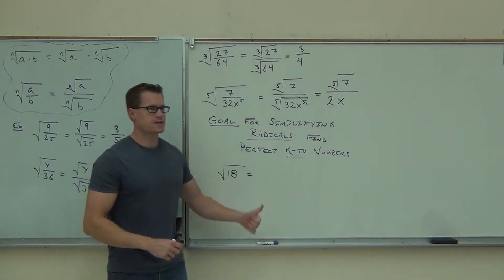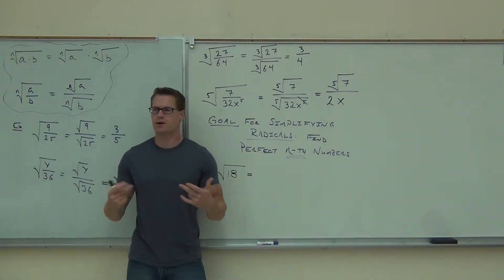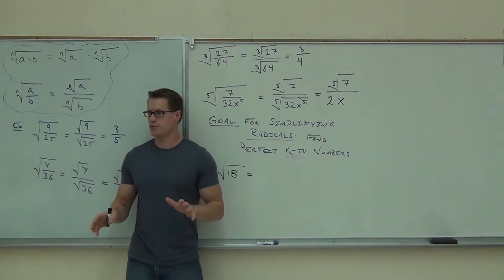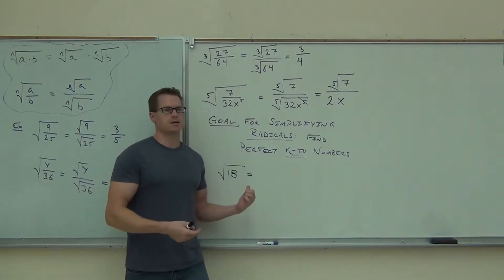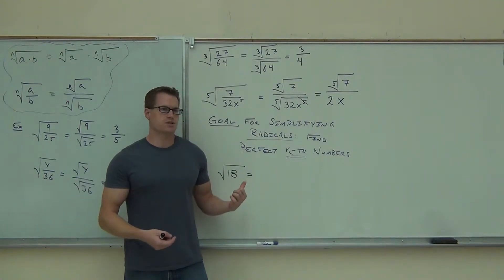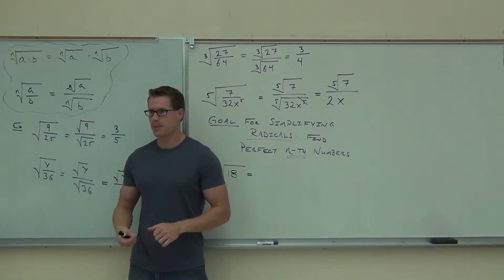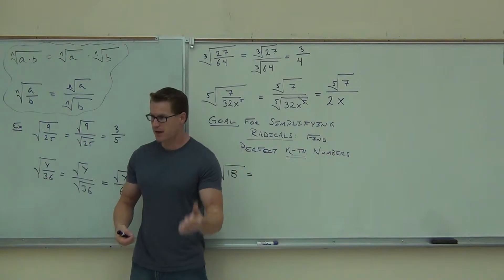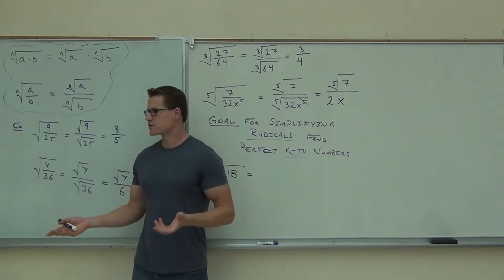If you have a square root of 18, we need to look for a perfect square number — which you guys just listed out for me — that divides 18. Can you think of a number that you can take the square root of that divides 18? 9 works. You can take the square root of 9, right?